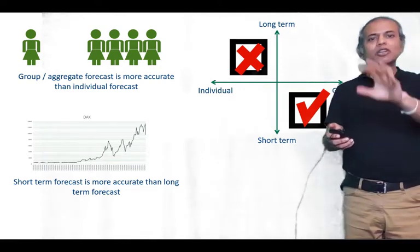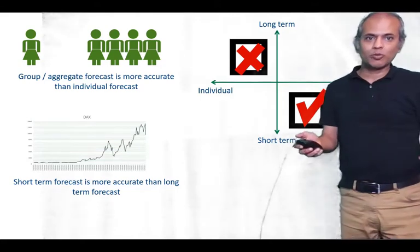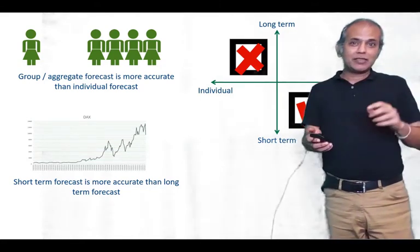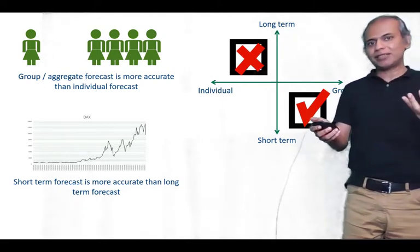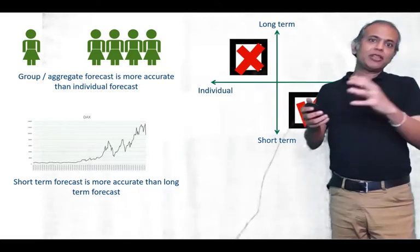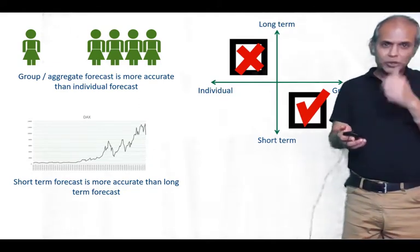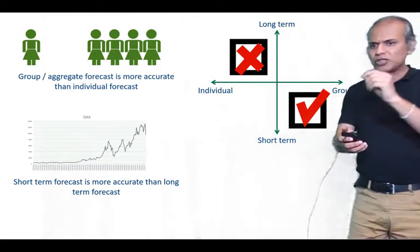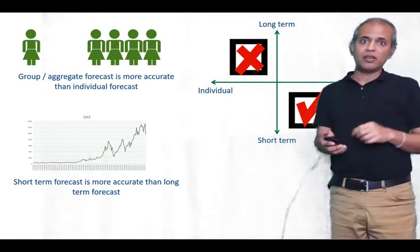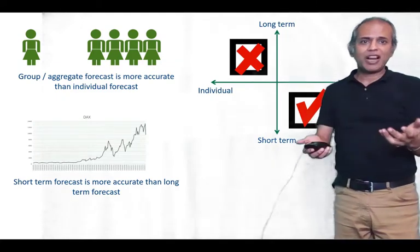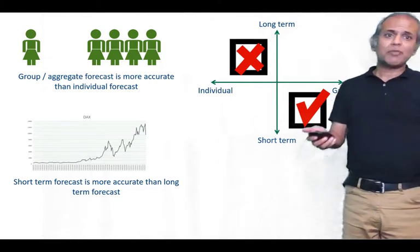Direct group forecasts are likely to be more accurate than forecasts of individuals added up. Here's a second example: the supply chain postponement strategy for paints. Most hardware stores don't maintain inventory of every individual paint color. Instead, they stock white base primer and multiple dyes, which are combined after the customer expresses a preference. Rather than analyzing each and every individual shade ordered over the past year, an easier and more accurate approach is to look at the total consumption of white primer and dyes over a past period and use that to forecast.